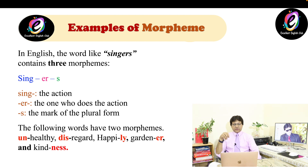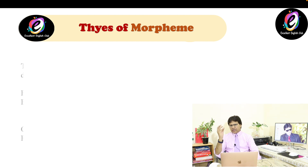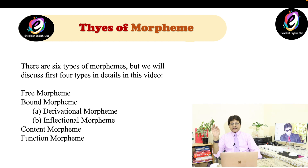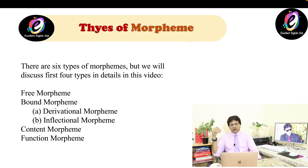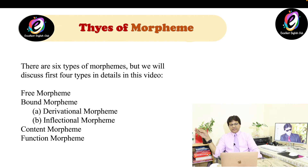Here are some more examples of words with two morphemes: unhealthy, disregard, happily, gardener, and kindness. Now, there are six types of morphemes. We will discuss the first four types in detail in this video. The first is free morpheme, the second is bound morpheme — which has two sub-branches: derivational morpheme and inflectional morpheme. Next are content morpheme and function morpheme. I will give a brief overview of content and function morphemes in this video.